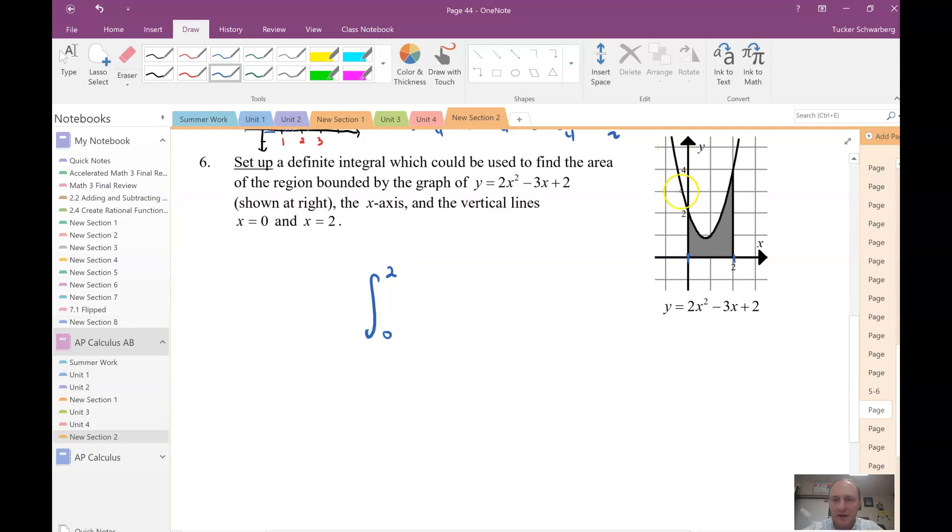Well, I want the area underneath this curve. So what is this actual curve? Well, they give us the function here, okay? So that is 2x squared minus 3x plus 2. And what are we integrating with respect to? We are integrating with respect to x. So I have dx, okay? Okay, and that's your answer.